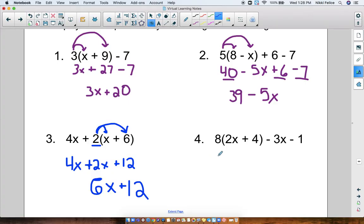And lastly over here, we have 8 times 2x plus 4 minus 3x minus 1. So first, let's distribute. 8 times 2x is 16x. Well, my pen is being so funny. I'm sorry about that. 8 times 4 is 32. Oops, that's a 32. Let me fix that for you all. And then minus 3x. And then minus 1.